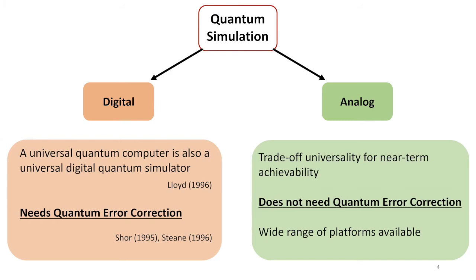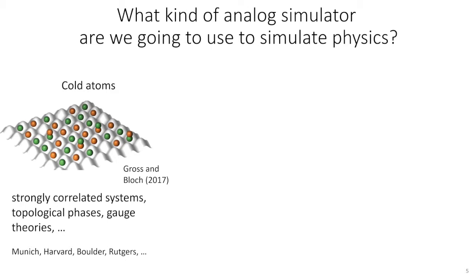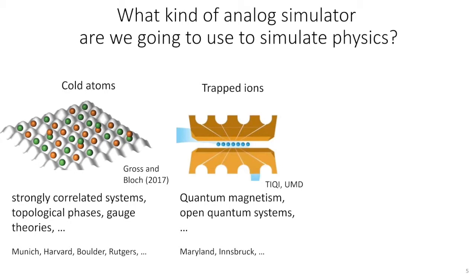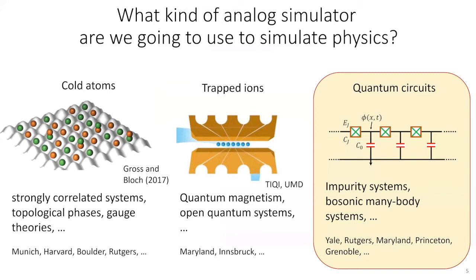This brings me to re-ask Feynman's question: what kind of analog simulator are we going to use to simulate physics? The most prominent candidate is cold atoms — Germany is at the forefront of this research — which have investigated strongly correlated systems, topological phases, and gauge theories. Then there are trapped ions, which have investigated quantum magnetism and open quantum systems. In recent years, quantum circuits have emerged as a viable candidate for simulating impurity systems or bosonic many-body systems, and it is this last platform that I want to focus on today.